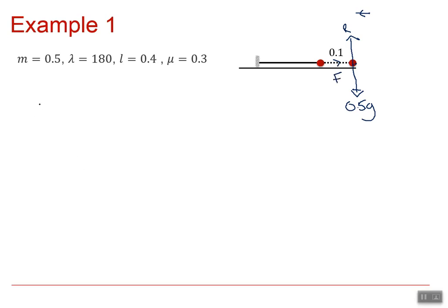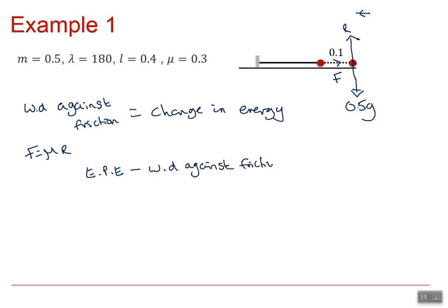So using the work energy principle, we know that the work done against friction is equal to the change in energy. Now our object is moving, so friction is at its maximum constant rate of mu R. And our initial kinetic energy is 0. And initially we have some elastic potential energy. So our change in energy is a change from elastic potential energy to kinetic energy. So when we rearrange our formula, we're going to have elastic potential energy minus the work done against friction is going to equal our kinetic energy.